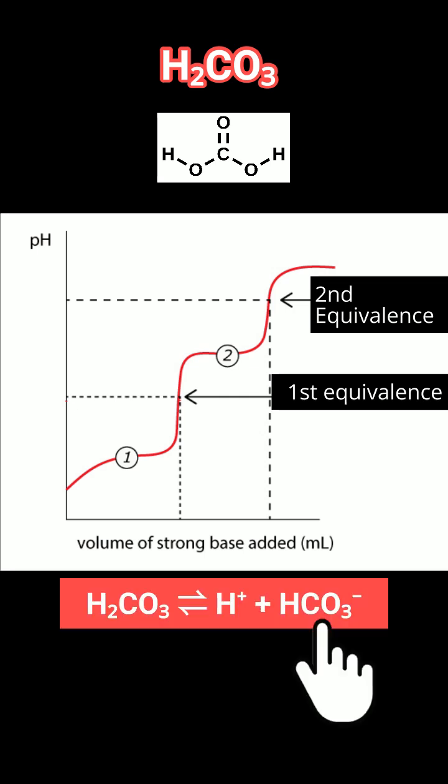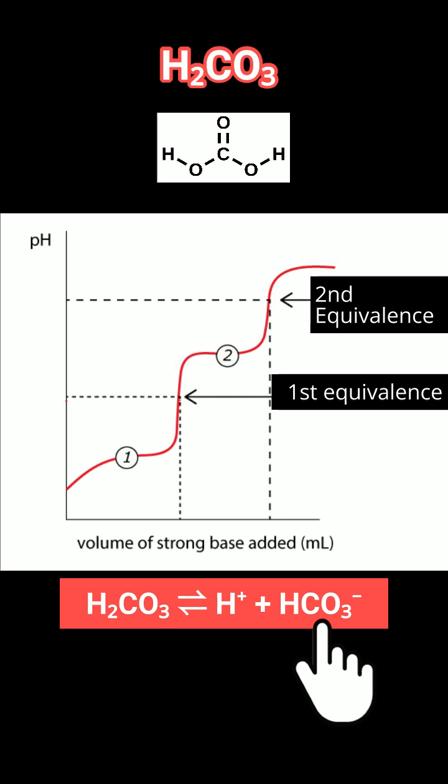First, H2CO3 donates one proton to become HCO3-. This forms your first buffer region centered around pKa1, where the solution resists pH change and the curve flattens out.